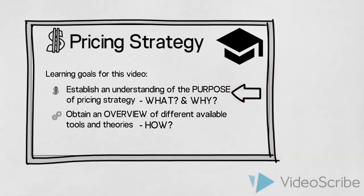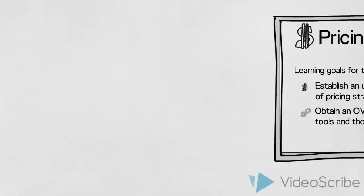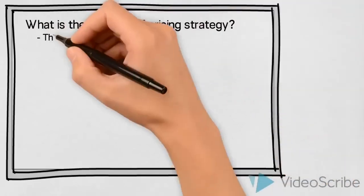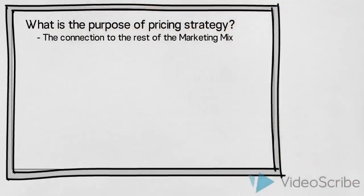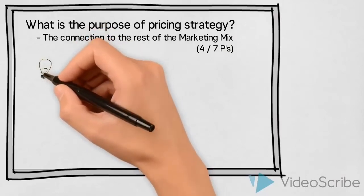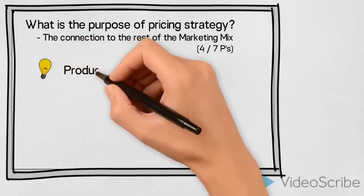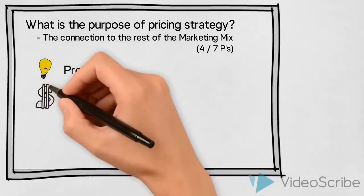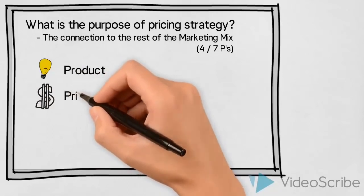So, what is the purpose of pricing strategy and what is the connection to the rest of the marketing mix? When you are asked to design the marketing mix, you need to make decisions on four or seven core elements, also known as the four or seven P's. First of all, any issues concerning the product — this would include packaging and all other elements in connection with the product. Secondly, a decision on price, which is what this video will address.